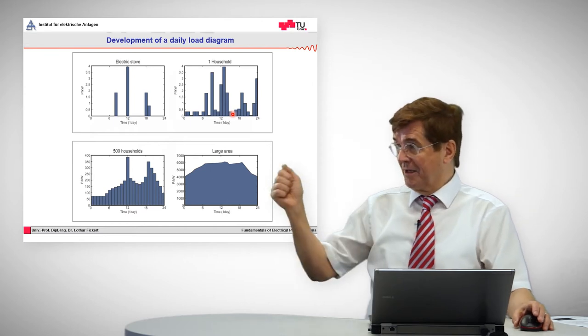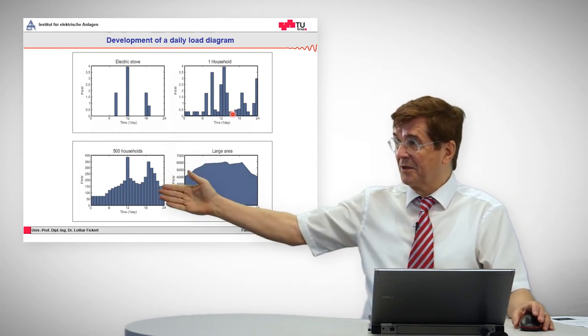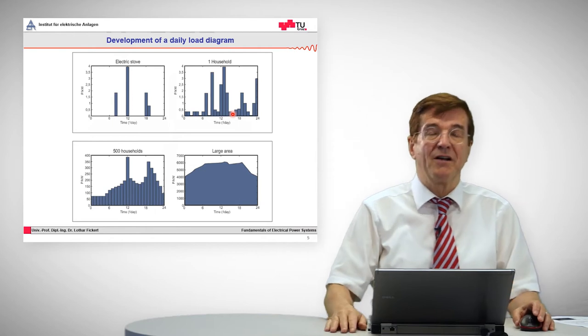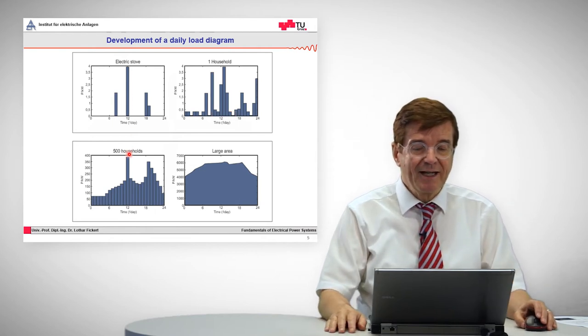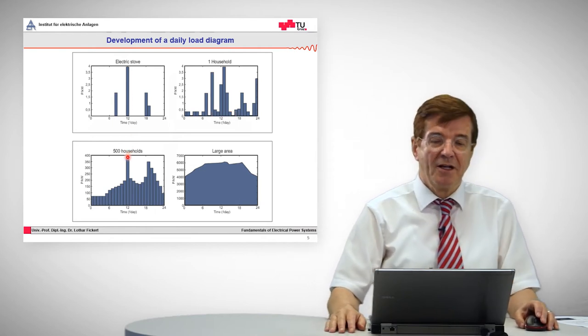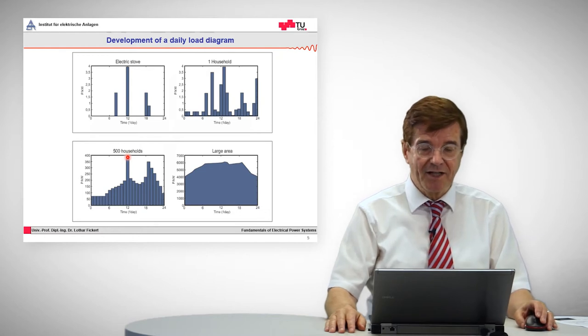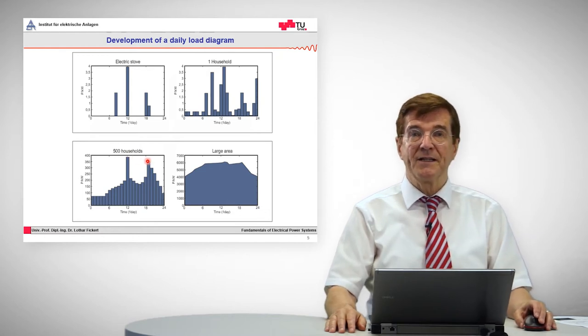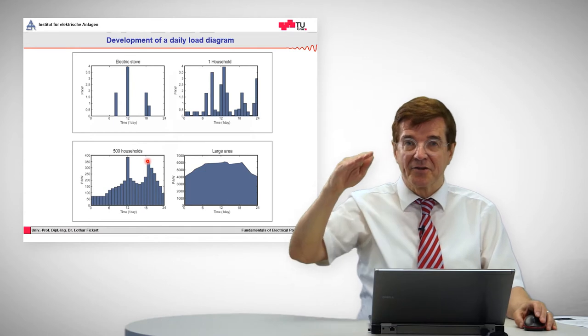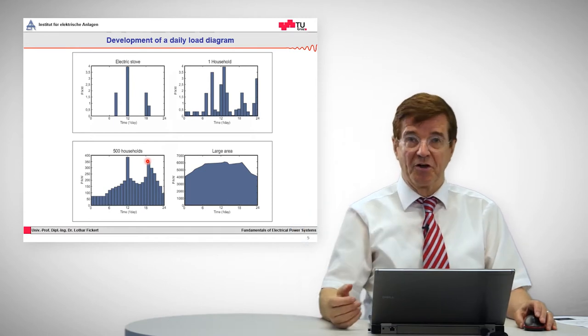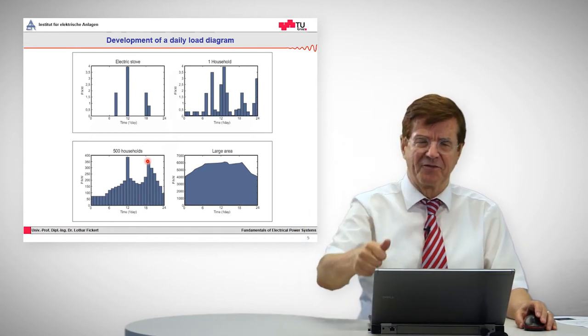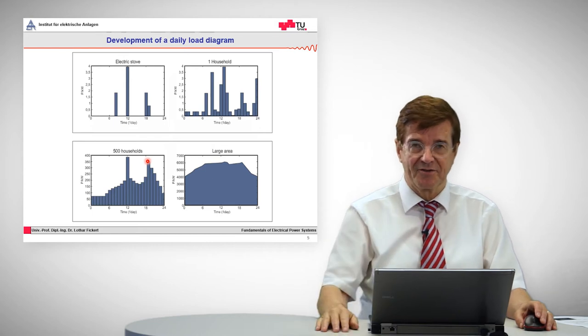If more than one household is superimposed and we for example take the load curve for 500 households, we again find this typical load peak at lunchtime and another load peak in the evening which is decreasing gradually due to switching off all the appliances like switching off the television, the washing machine and so on.